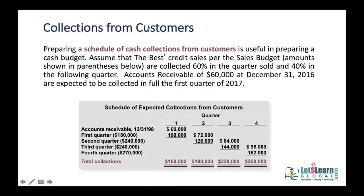Now let's work on cash collection from customers, which is a very important topic in the CMA examination. For example, if a company's policy is that 60% of collection takes place in the same quarter of the sale and 40% in the next quarter, and the sale is $60,000 in a quarter, then in the same quarter you collect 60% of that amount and the remaining 40% goes to the next quarter.